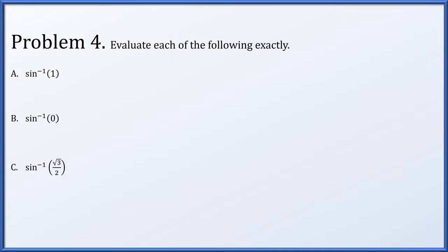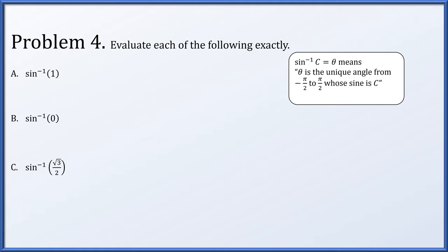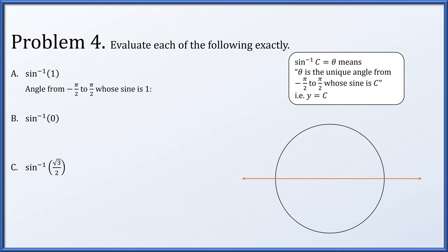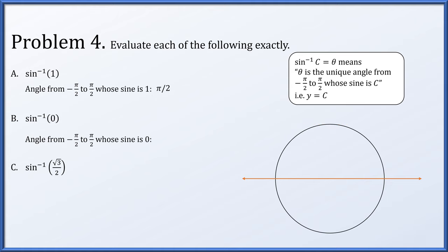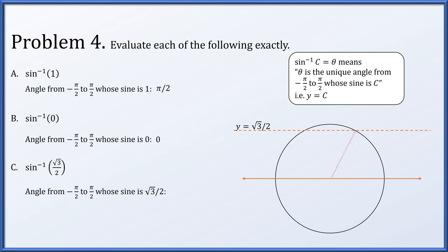In problem 4, we evaluate three expressions exactly. The arc sine of c equals theta by definition is that theta is the unique angle between plus or minus pi over two whose sine is c — an angle pointing somewhere whose y coordinate is c on the unit circle. In item a, we want an angle from minus pi over two to positive pi over two whose sine is one; the unique such angle is exactly pi over two. For item b, we want an angle whose sine is zero, giving the angle of zero. For part c, the unique angle between plus or minus pi over two whose sine is root three over two is pi over three.